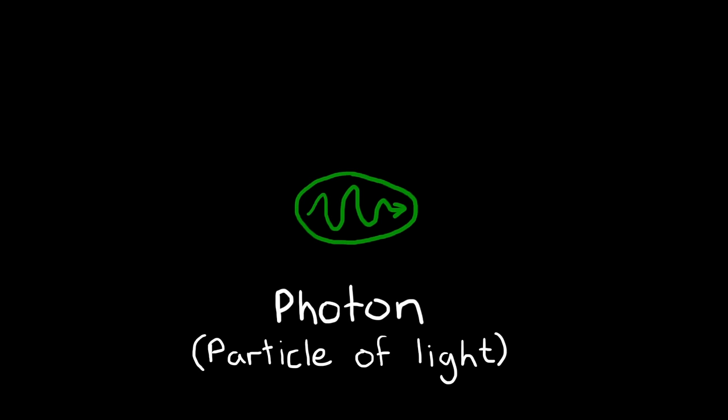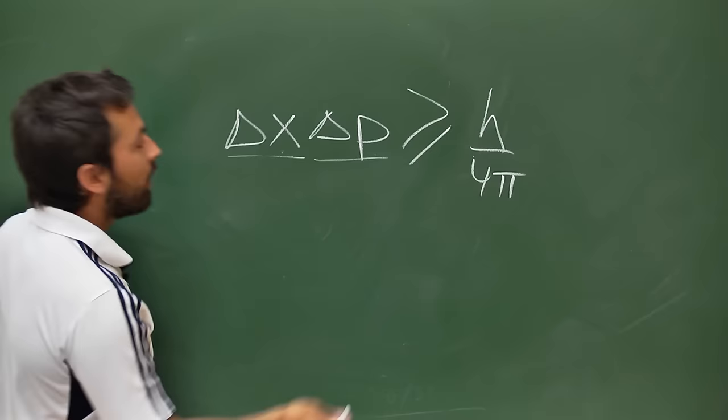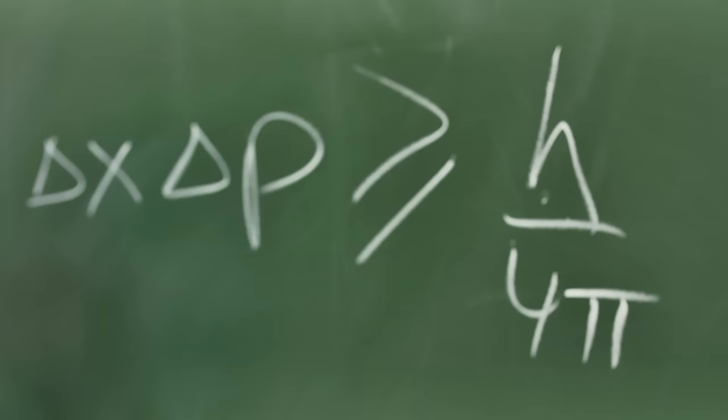Well, it's about the position and the momentum of a particle. So x is the position of the particle and p is its momentum. So delta x is the uncertainty in position and delta p is the uncertainty in the momentum. Now if you multiply those two quantities together, they must always be greater than or equal to h on 4 pi.